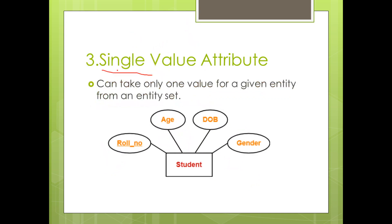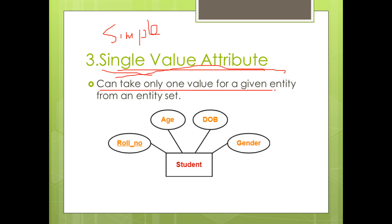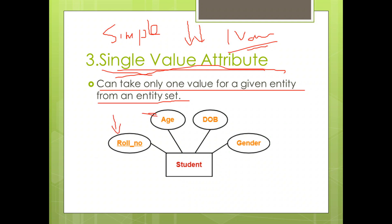Next is single-valued attribute. A single-valued attribute can take only one value for a given entity from an entity set. Examples include roll number — one student has one roll number — age, date of birth, and gender. Each of these takes only one value, so they are single-valued attributes.